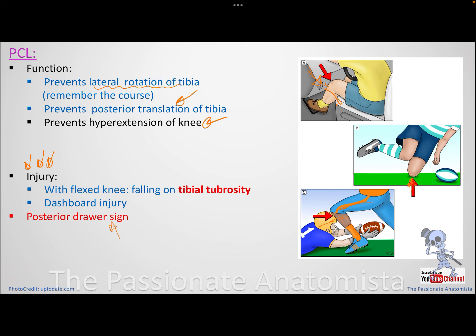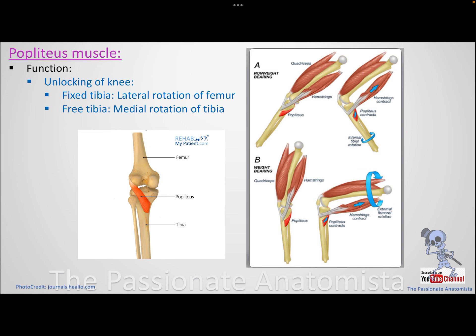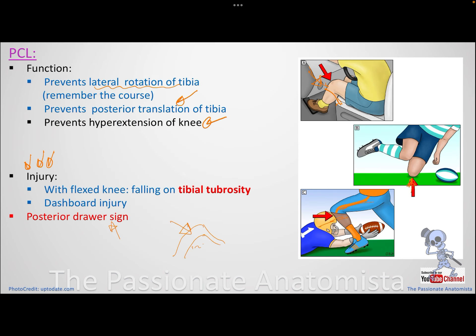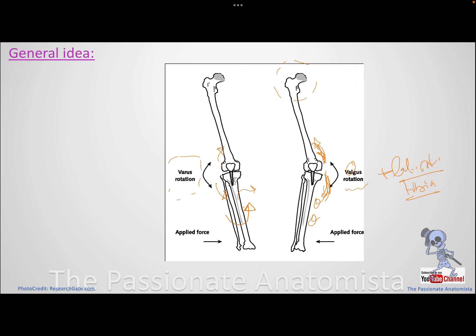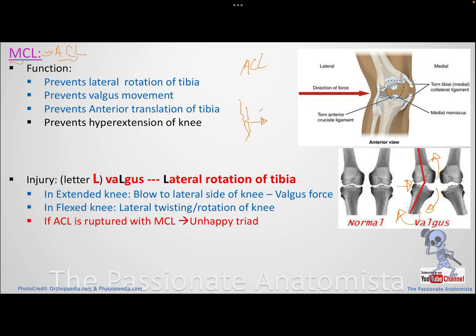How can you test the PCL? It's very easy — opposite to the anterior drawer and opposite to the Lachman's test. You flex the patient's knee 20 to 30 degrees and then try to push the tibia backward. If it lags and you can feel it moving backward, it means the PCL is injured.